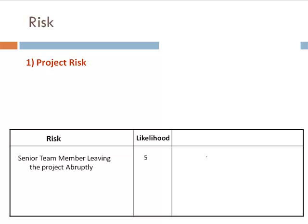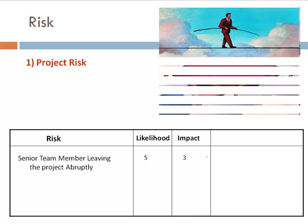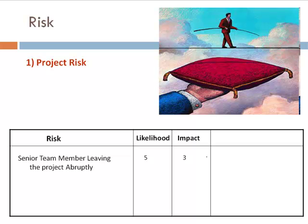Every risk is assigned a likelihood — that is, the chance of it occurring — typically on a scale of 1 to 10. Also, the impact of that risk is identified on a scale of 1 to 10. But just identifying the risk is not enough; you need to identify a mitigation. In this case, mitigation could be knowledge transfer to other team members and having a buffer tester in place.